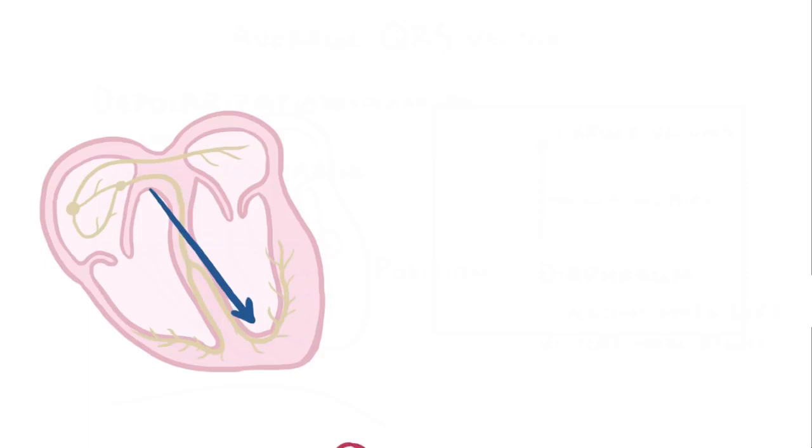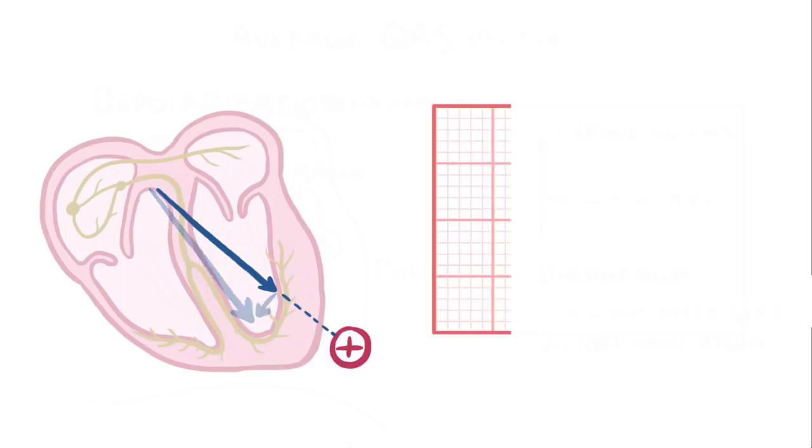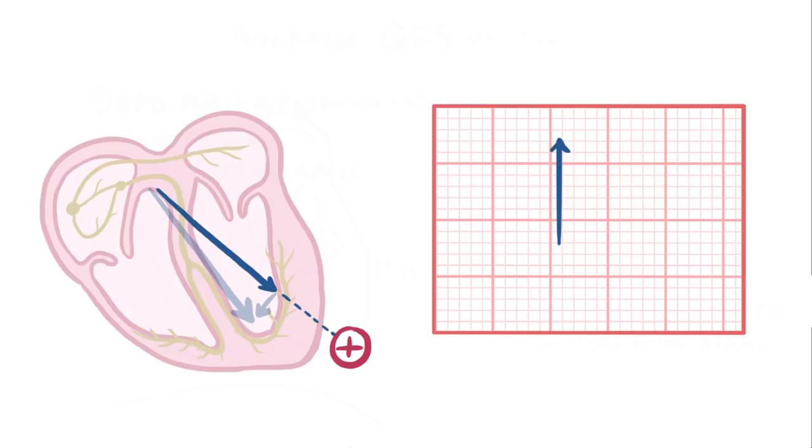Now remember that vectors can be broken down into two perpendicular vector components. So if you look at the component that points at the positive lead electrode, that's what gets recorded on the ECG, and therefore when you plot these vectors over the course of a ventricular depolarization, you end up with the QRS complex.